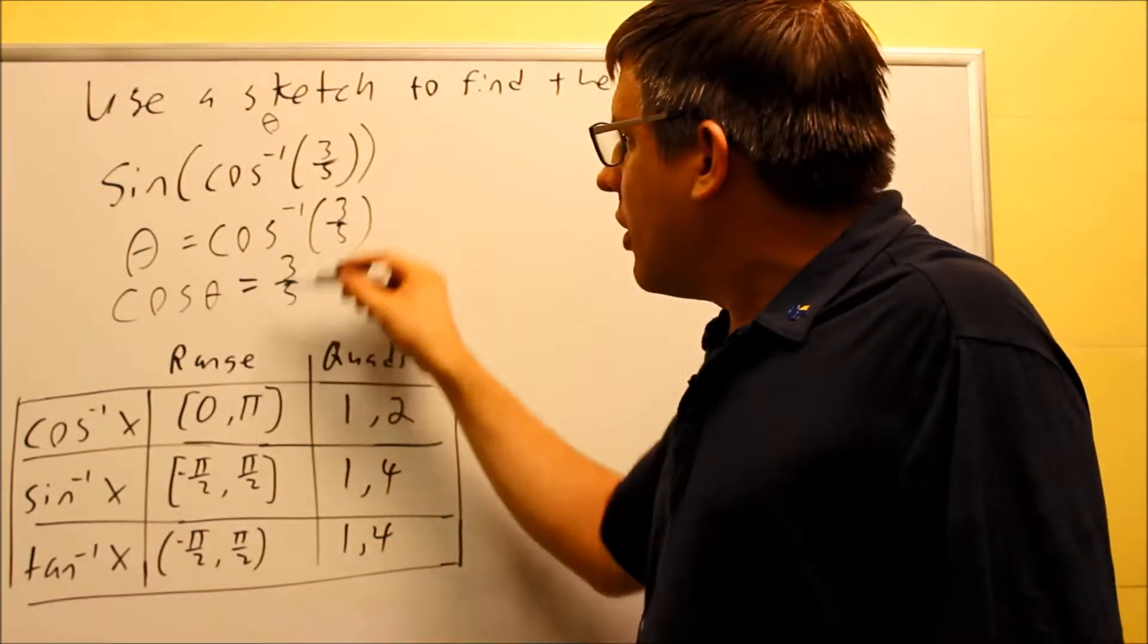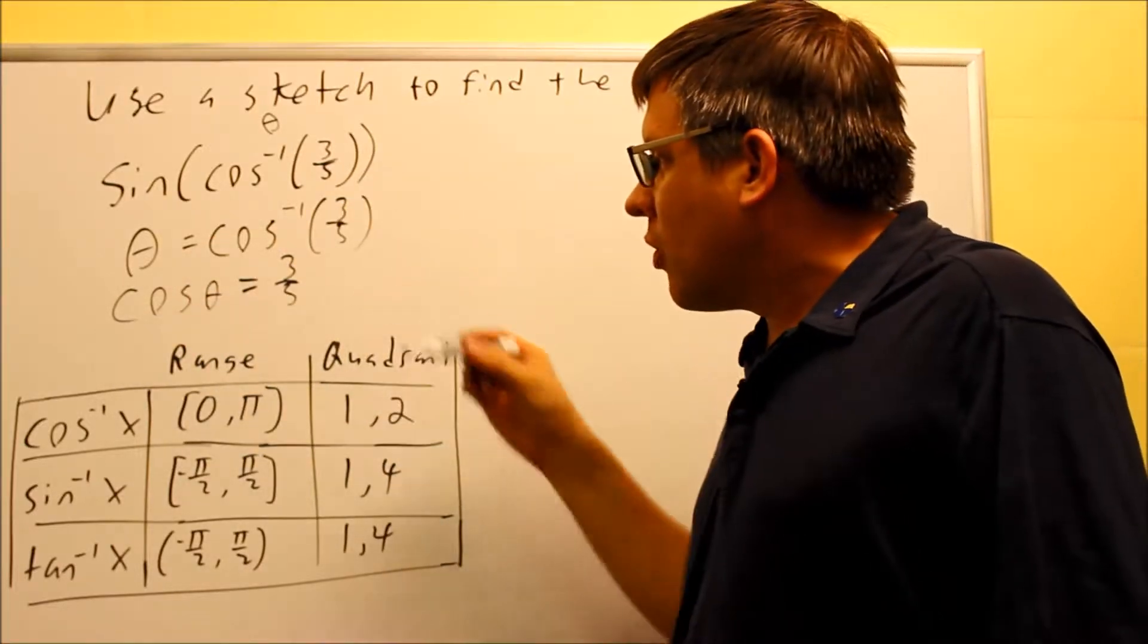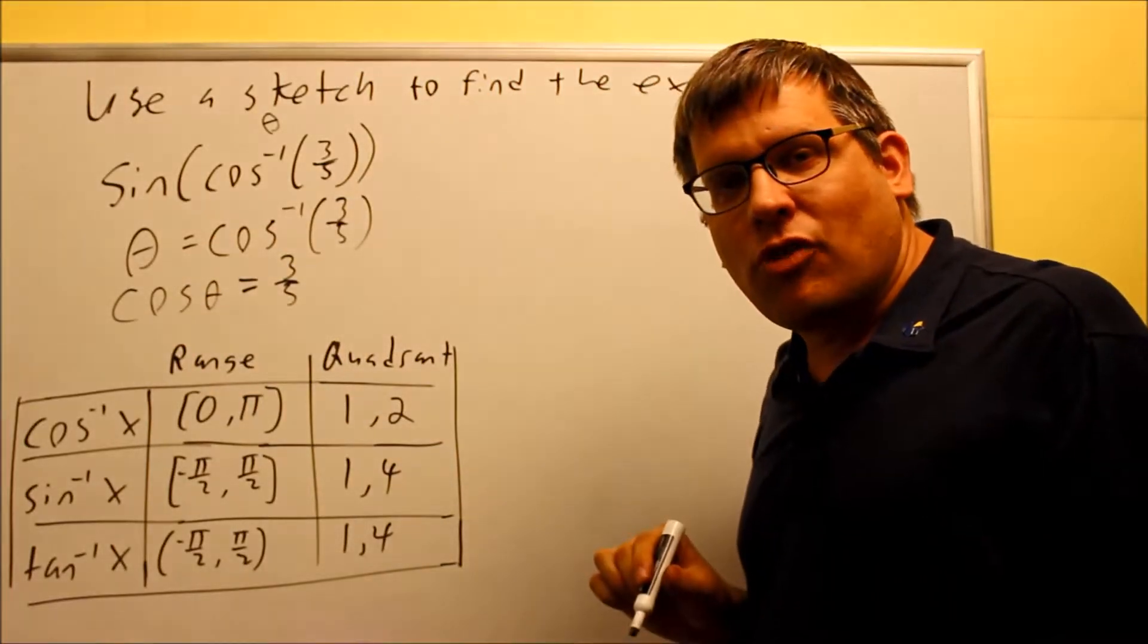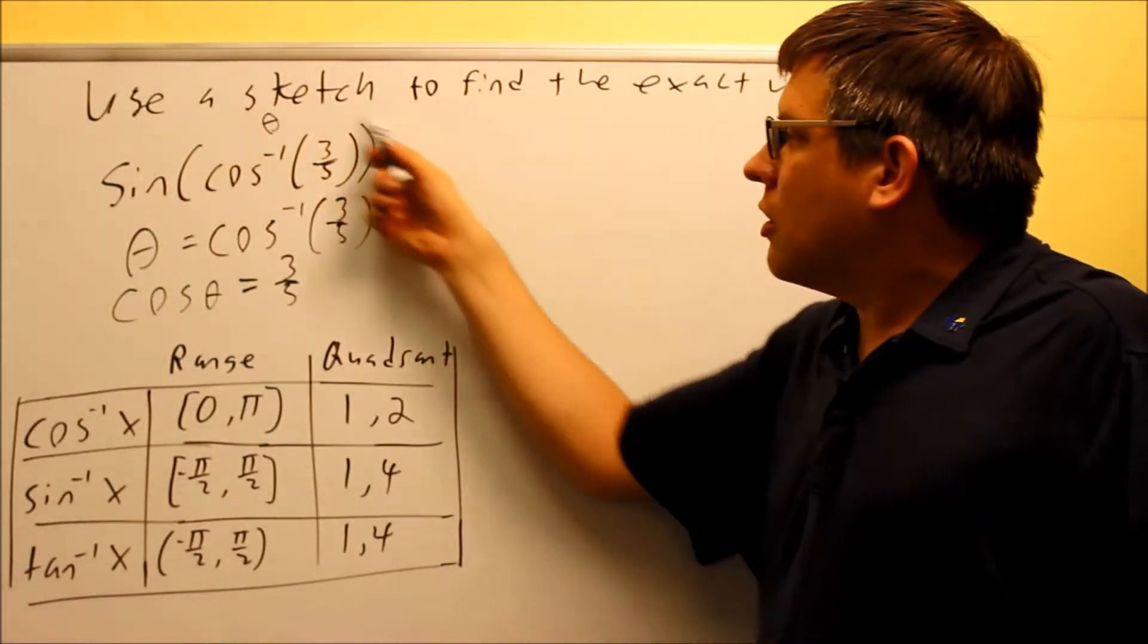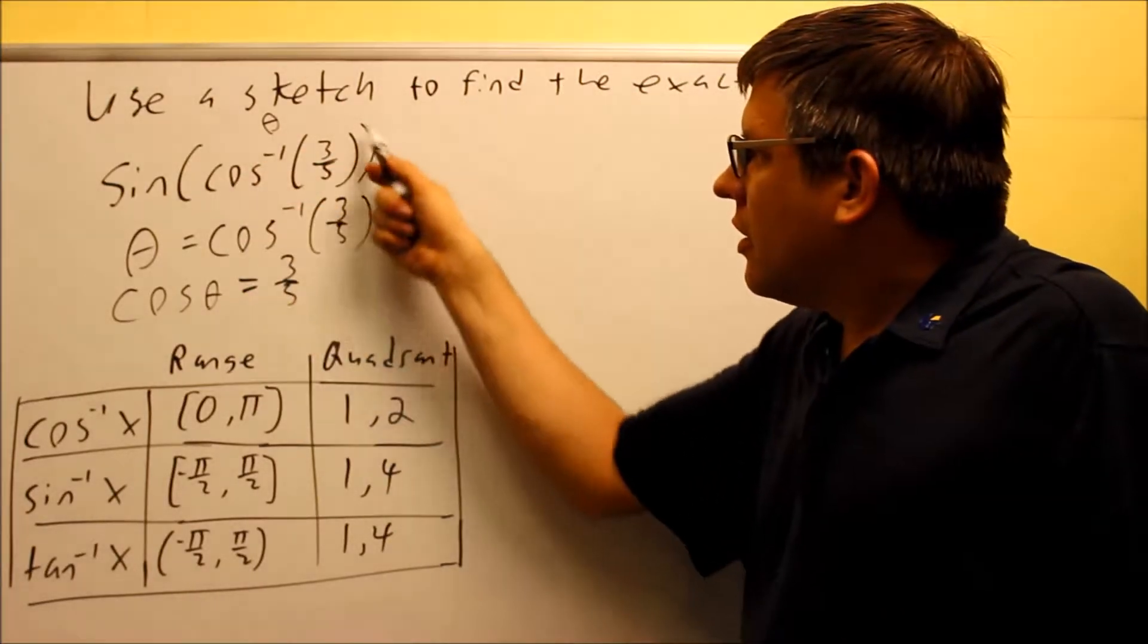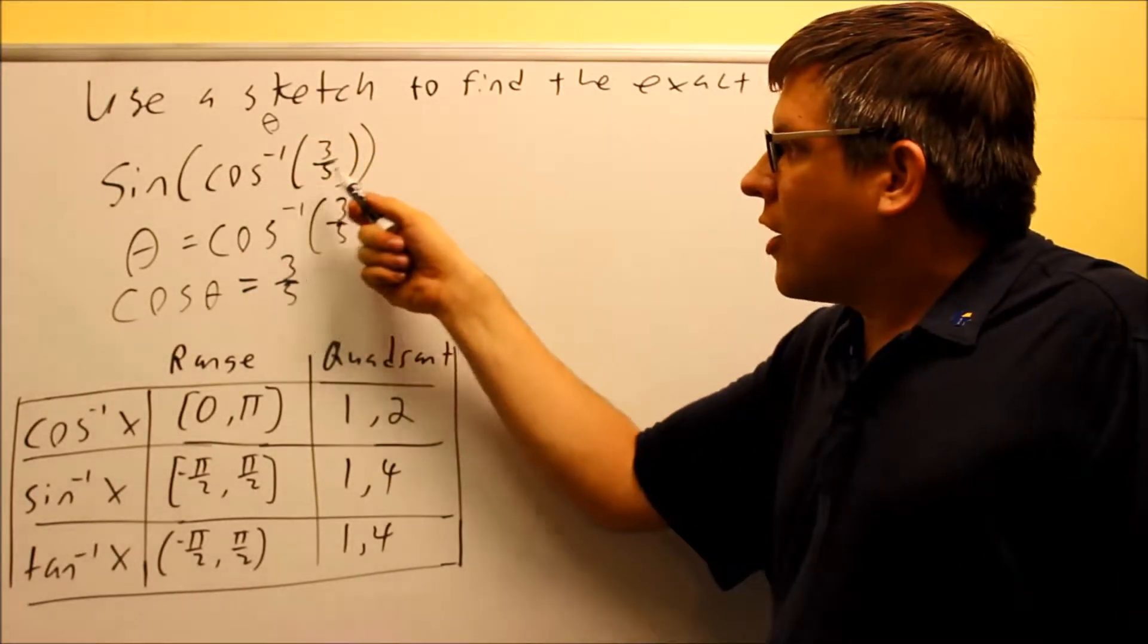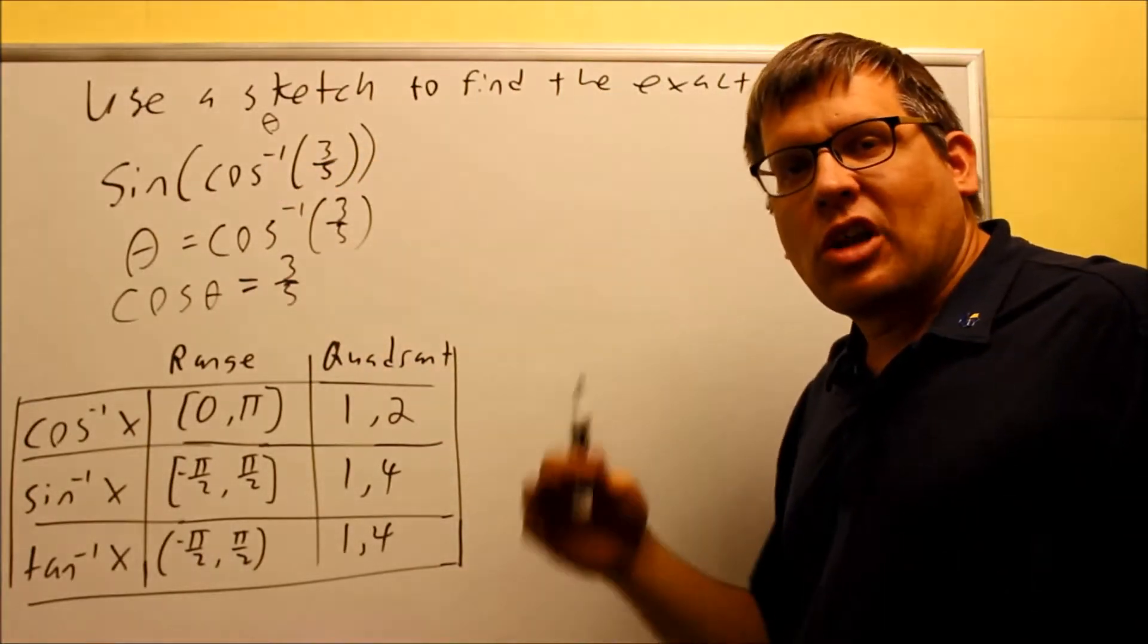So here we go. Going through all this, the inside part was theta. We went through and we found that cosine theta is the same thing as three-fifths. I can draw a triangle that relates to this information. So the way this can be interpreted, how I'm going to get my final answer here is the inside part is going to be for drawing the triangle. That whole part inside helps us to set up the triangle itself.